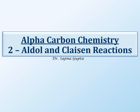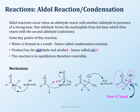In the second part of alpha carbon chemistry, we're going to learn about aldol reactions and Claisen reactions. Let's talk about aldol first — specifically the reaction and condensation, and what the difference between the two is.